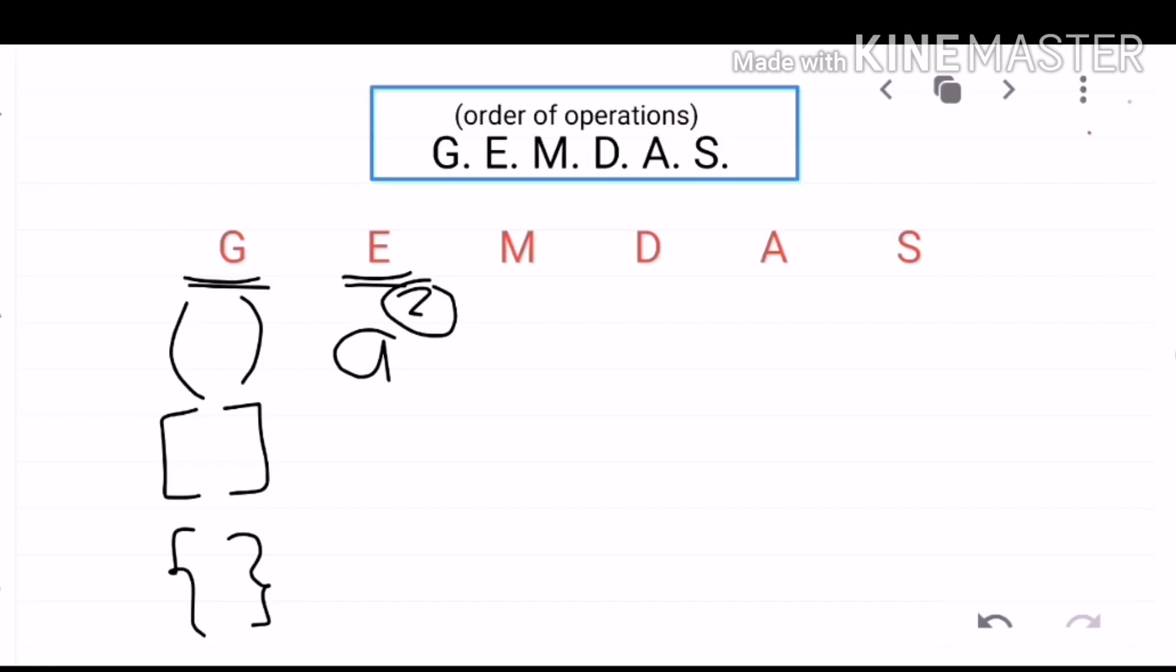M stands for MULTIPLICATION, D for DIVISION, A for ADDITION, and S for SUBTRACTION.